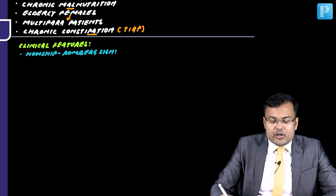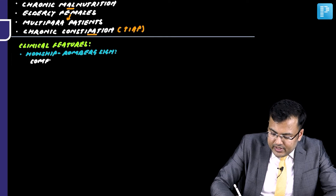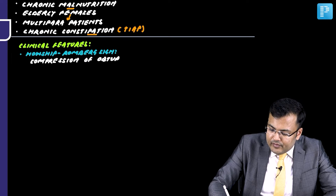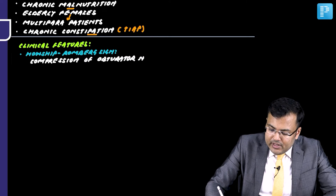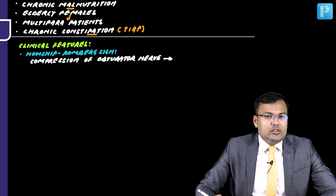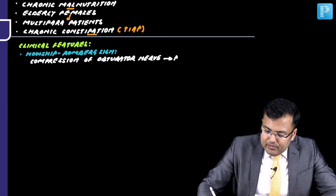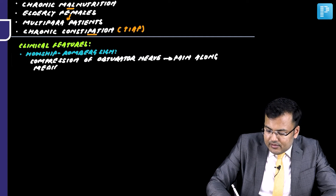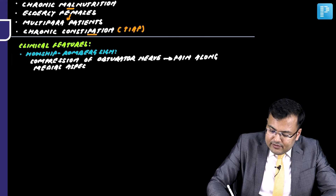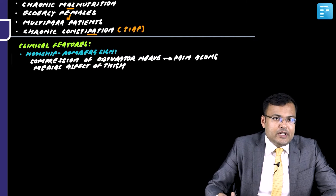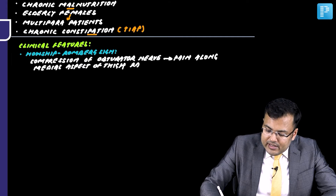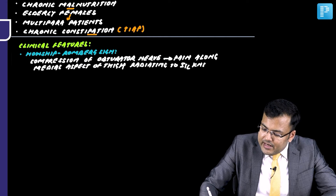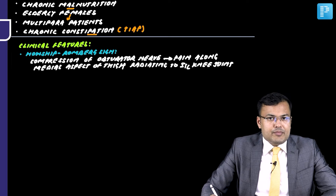In Horship-Romberg sign, because of compression of the obturator nerve, patients have pain along the medial aspect of the thigh radiating to the ipsilateral knee joint.